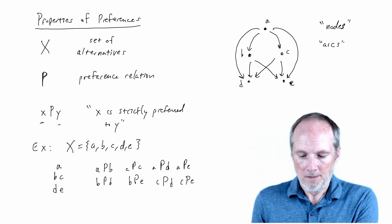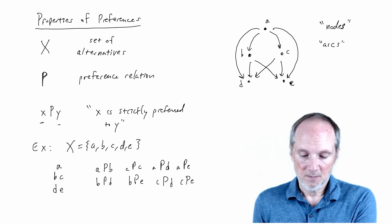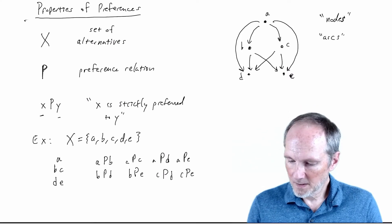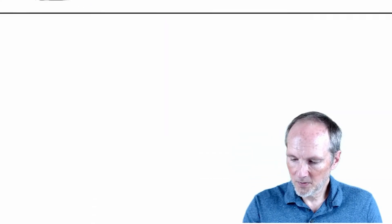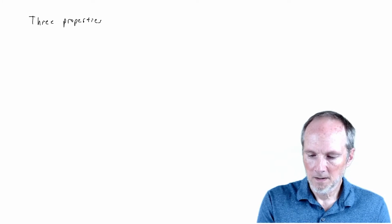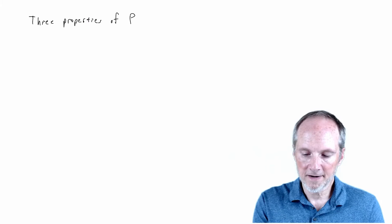Now, I said intuitively we want to think about this decision maker as having a ranking. Let's be more formal about that. The way I'm going to express this idea formally is to define properties of this preference relation. I'll give three properties that a strict preference relation could have.